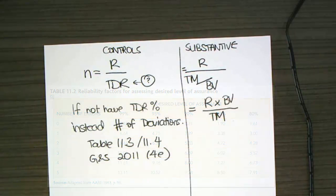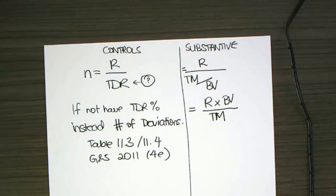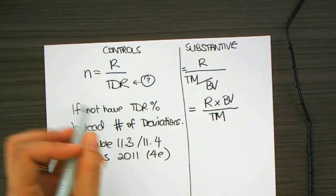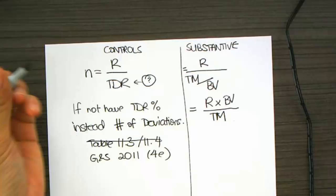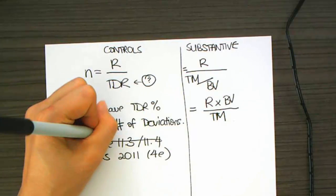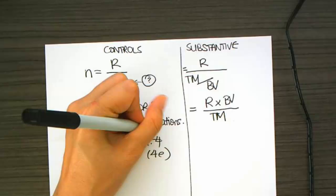When I'm doing my substantive testing, how's that going to work? So, again, I'm going to talk about the reliability factor. Where am I going to get the book value for the account? Well, that's typically the value of the account that you're auditing, so it'll say in the question, inventory's worth 100,000 or 150,000. Where does the tolerable misstatement information come from?